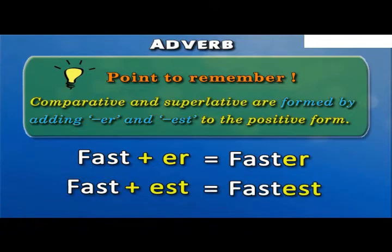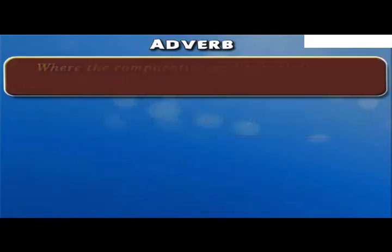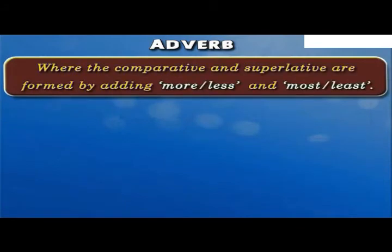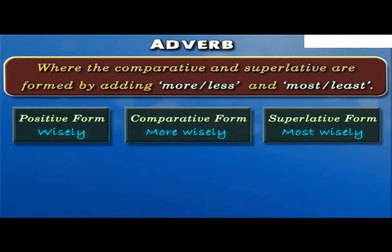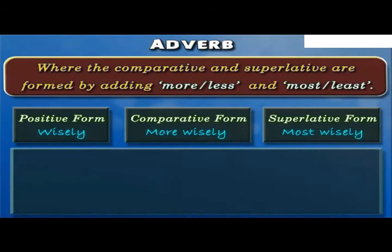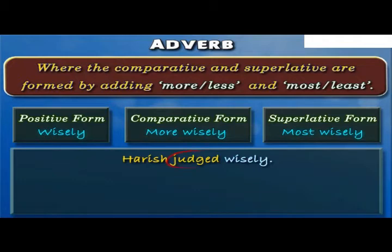Now let us understand some typical cases where comparative and superlative are formed by adding more or less and most or least. For example, for the adverb wisely, the comparative form would be more wisely and the superlative form would be most wisely. Let us look at this example: Harish judged wisely. Here, wisely is used as the positive form of adverb, describing the verb judged.